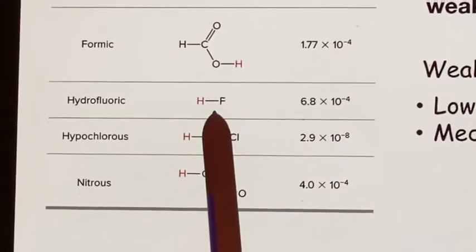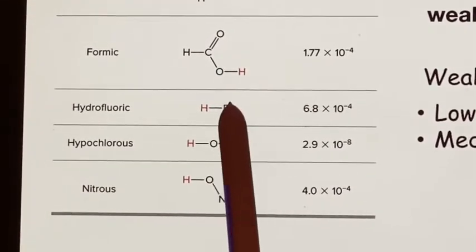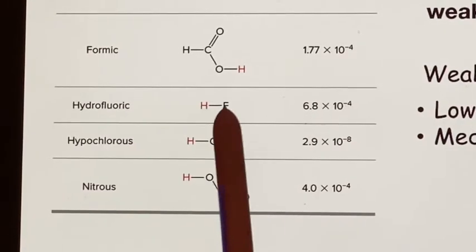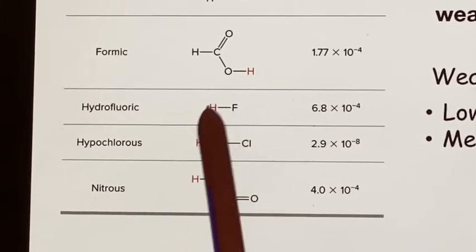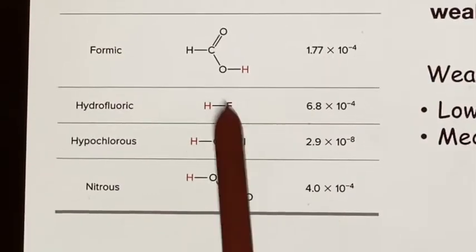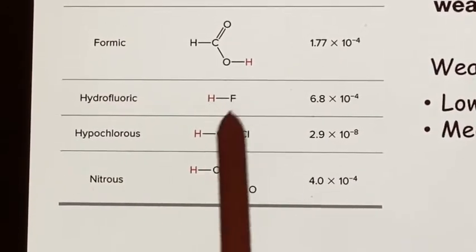Why is that? This fluorine, it's tiny. So this bond length is very short. It becomes difficult for things to get away when they're so tightly connected.